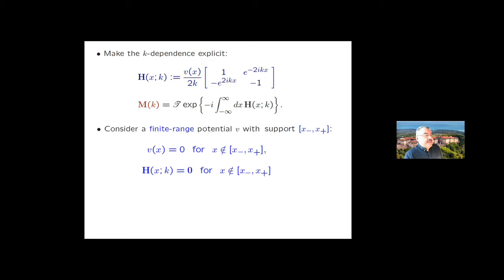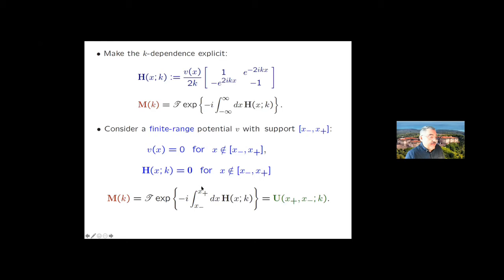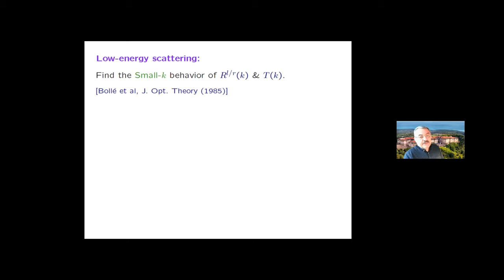First I will consider the case that the potential has finite range — compact support from x_minus to x_plus, so the potential vanishes outside. When the potential vanishes, the Hamiltonian vanishes and there is no evolution. The transfer matrix is given by the time-ordered exponential with the integral taken from x_minus to x_plus. The aim of low energy scattering is to determine the behavior of scattering data — the reflection and transmission amplitudes — when k is small, the k going to zero limit. This is an old problem studied by mathematicians for decades.